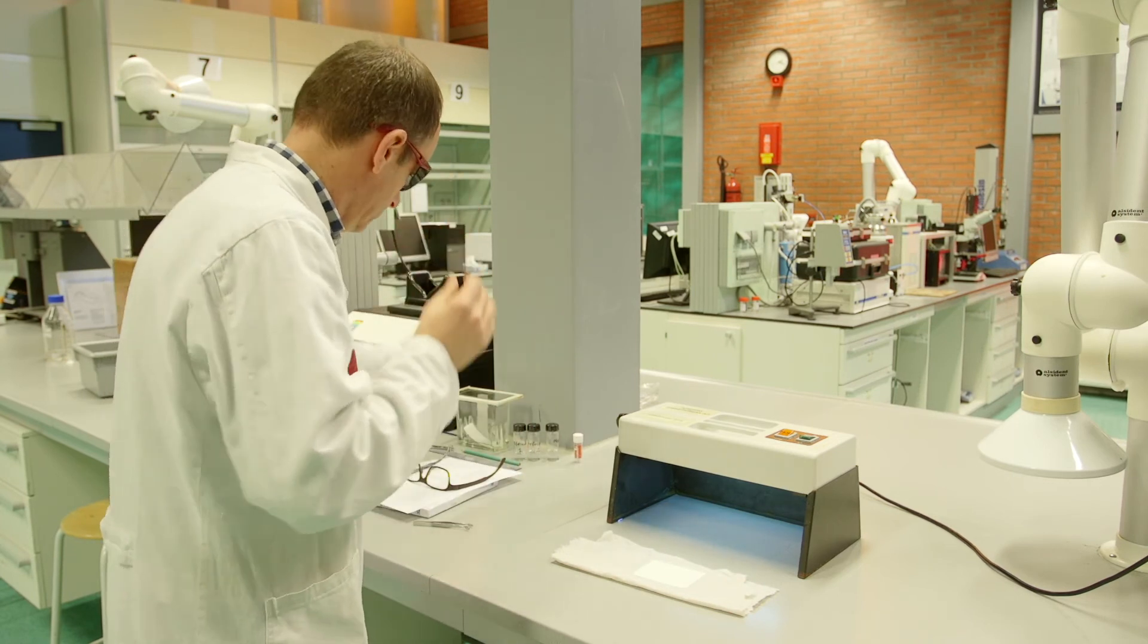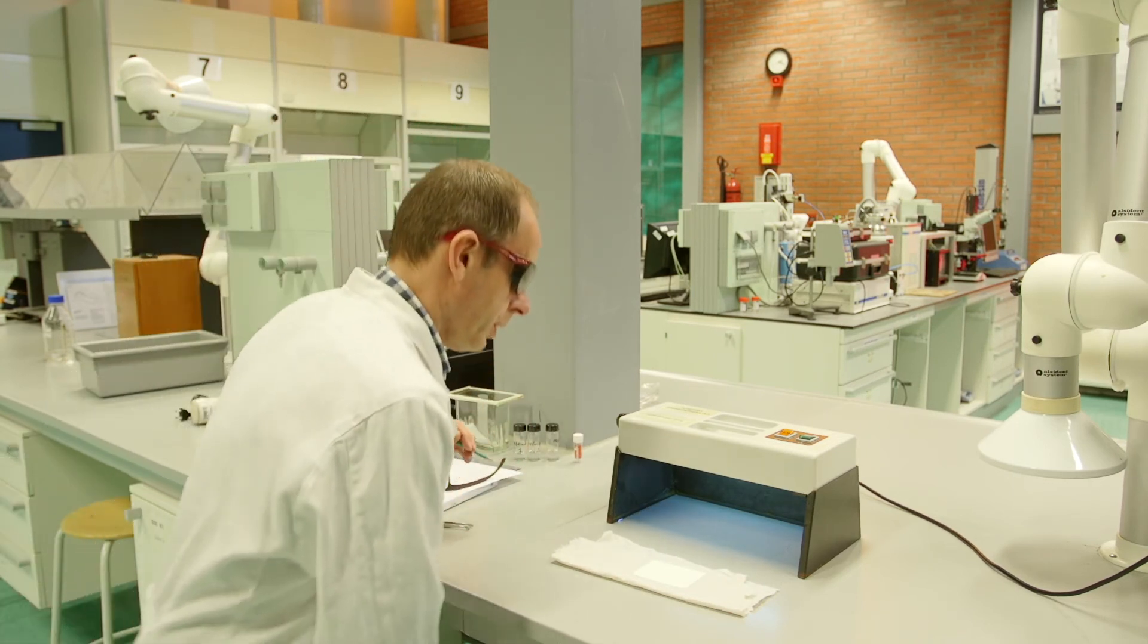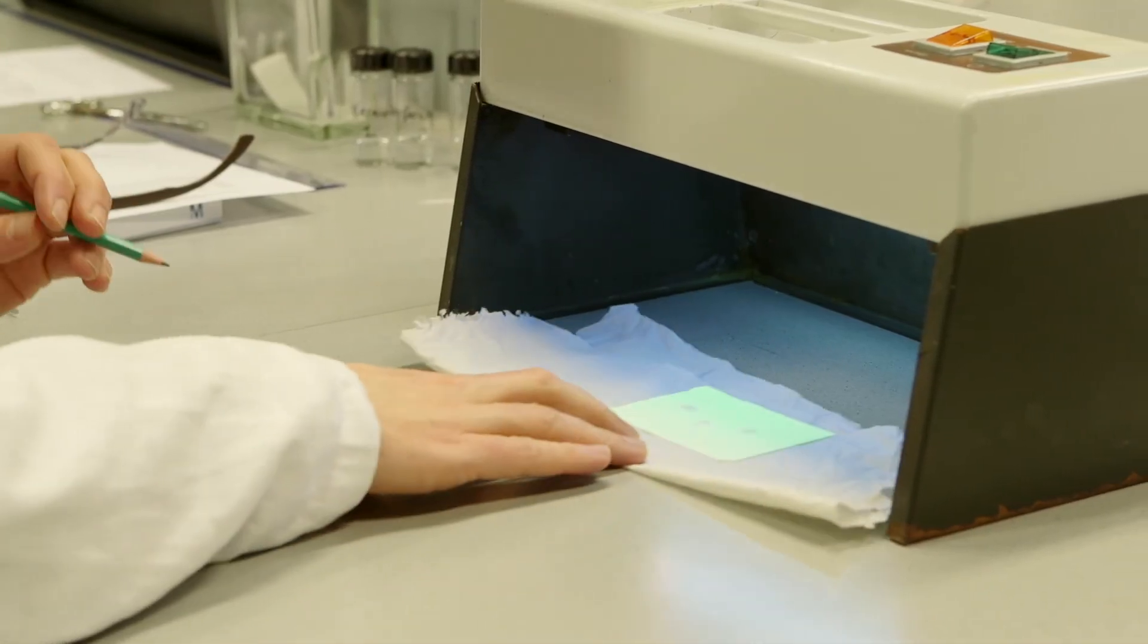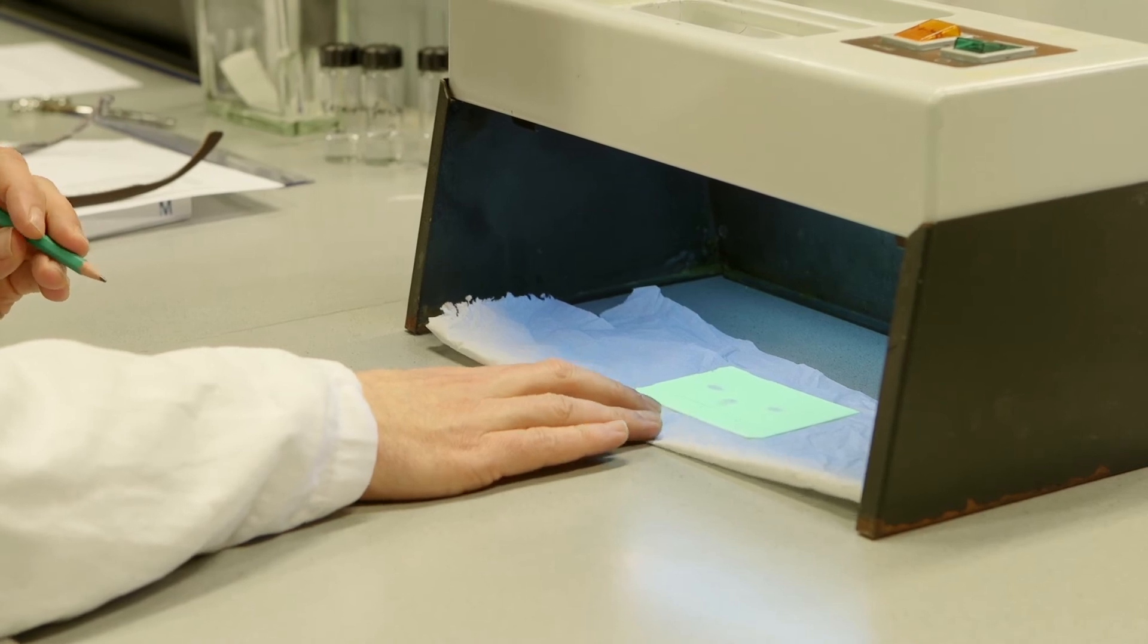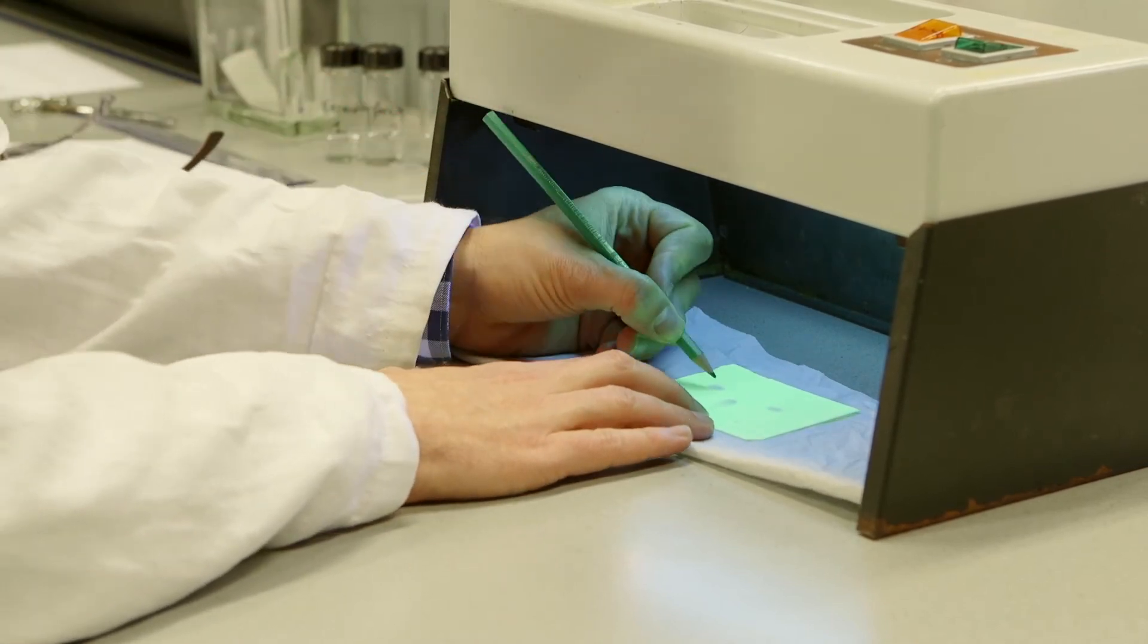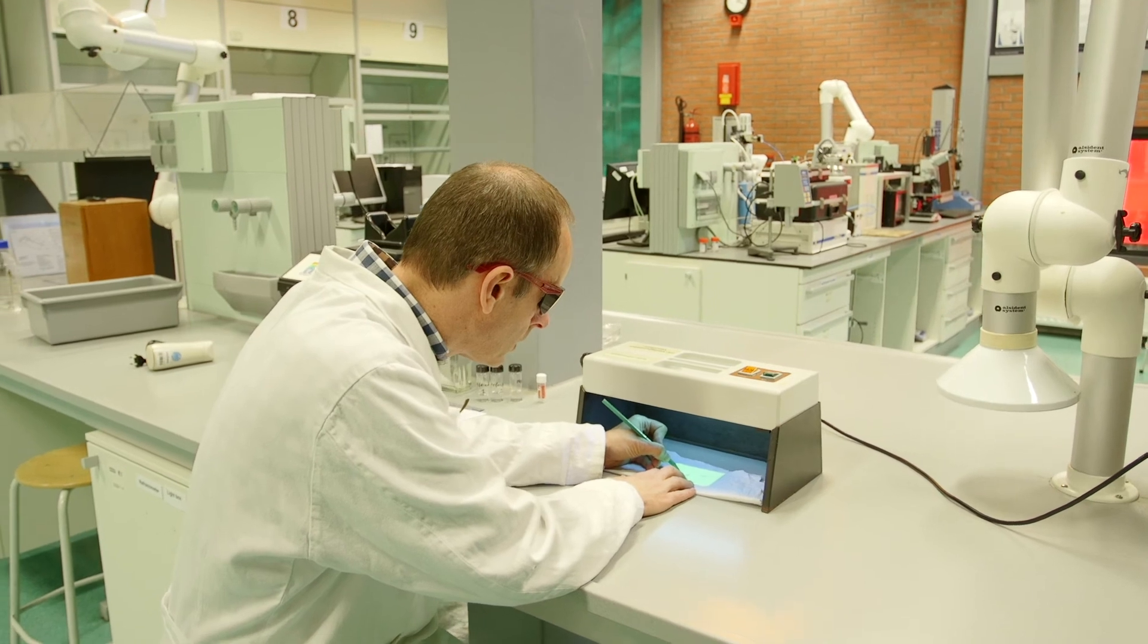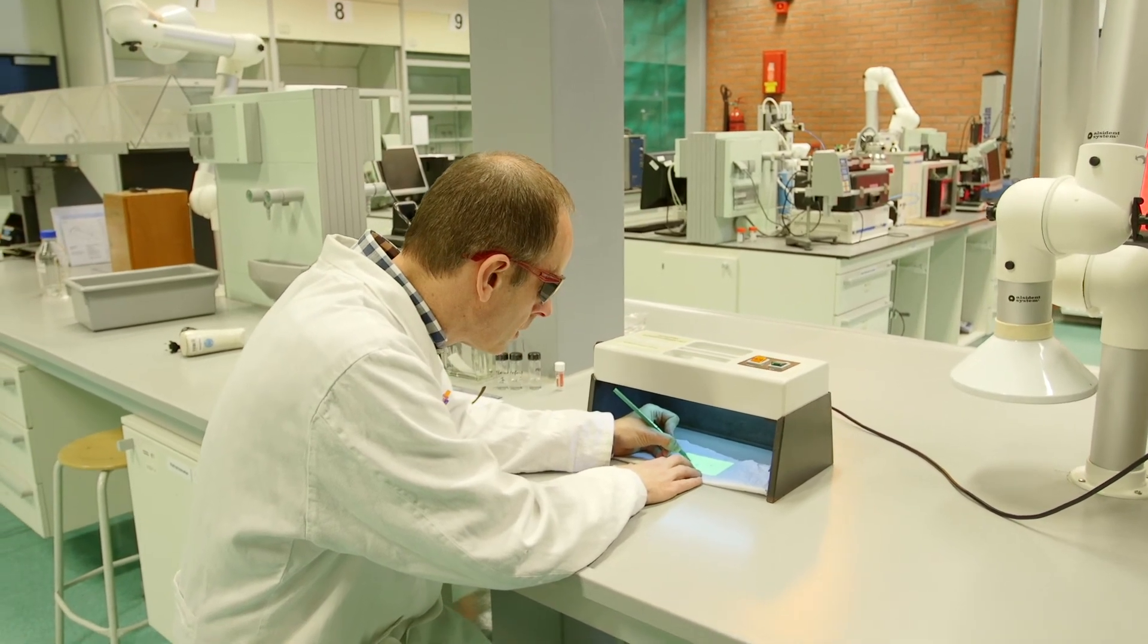After the separation, the components can be visualized in different ways. The first possibility is irradiating with UV light. Some substances exhibit fluorescence or a dark spot under UV radiation of a certain wavelength. In this method, the plate remains intact.